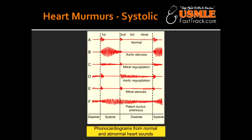What condition can lead to tricuspid regurgitation? Tricuspid regurgitation can be caused by right ventricle dilation. Additionally, rheumatic fever and infective endocarditis can cause either mitral regurgitation or tricuspid regurgitation.